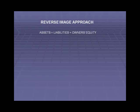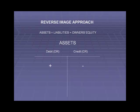The accounting equation we learned in the prior chapter is: assets equal liabilities plus owner's equity. Assets are increased with a debit and decreased with a credit. For all T-accounts, the debit is on the left-hand side, abbreviated as DR, and the credit is on the right-hand side, abbreviated as CR. Again, assets are increased with a debit — that's why the plus is there — and decreased with a credit, which is why the minus is there.